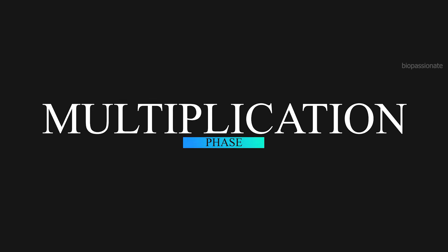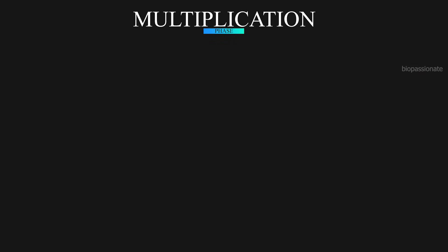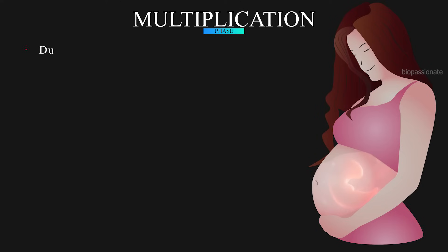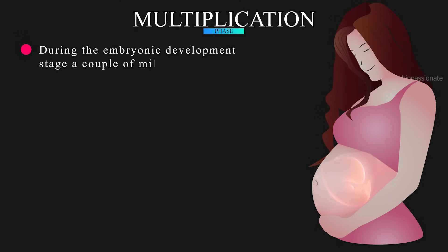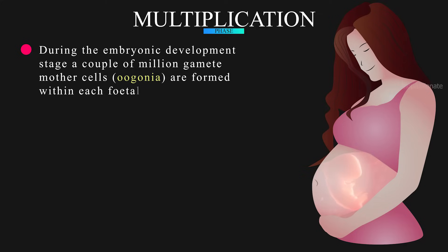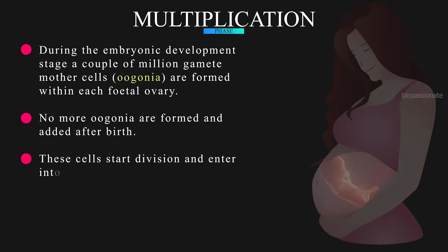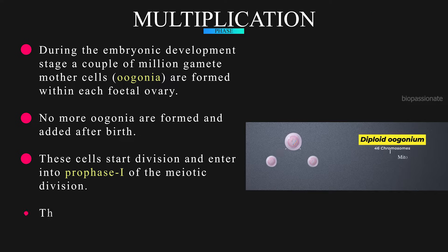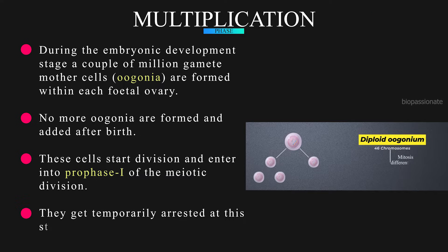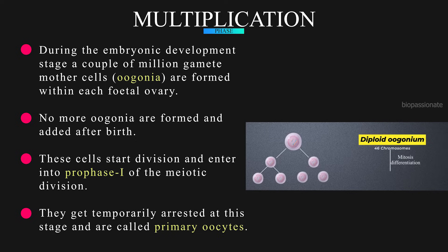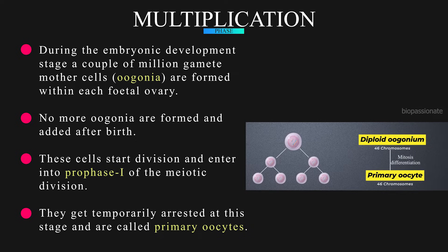During the embryonic development stage, a couple of million gamete mother cells are formed within each fetal ovary. No more oogonia are formed and added after birth. These oogonial cells start division and enter prophase I of meiotic division, where they get temporarily arrested and are called primary oocytes.